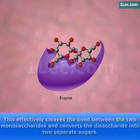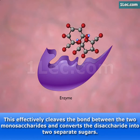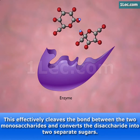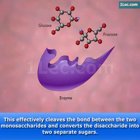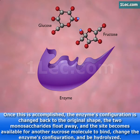This effectively cleaves the bond between the two monosaccharides and converts the disaccharide into two separate sugars. Once this is accomplished, the enzyme's configuration is changed back to the original shape.